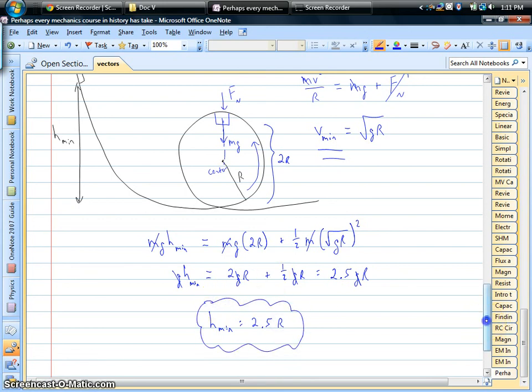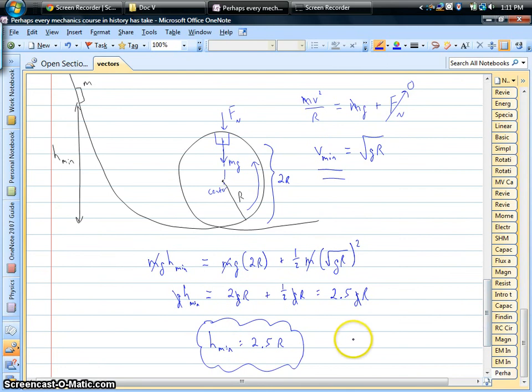And it's two-and-a-half times the radius of the loop. Now what do you suppose the most common answer is for this? Without people thinking very much, a lot of people would want to say, the minimum height, well it should just be the height of the loop.